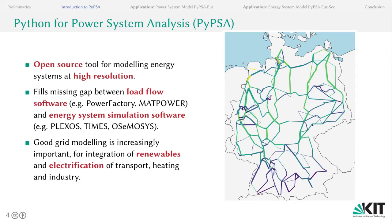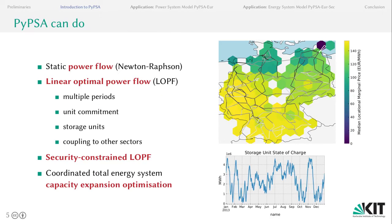This is also true when we look beyond just the electricity sector and consider the electrification of transport, heating, and industry sectors. PyPSA can do static power flow analysis using the Newton-Raphson algorithm, including a distributed SLAC implementation that was added recently, but also linear optimal power flow. We put particular focus on optimization across multiple periods to account for long-term energy storage and also coupling to other energy sectors. We have formulations for security constrained linear optimal power flow and also unit commitment.